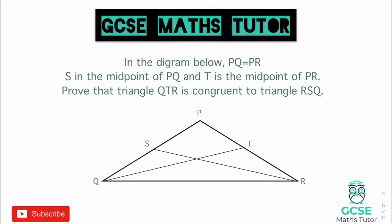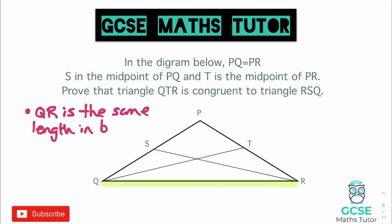The easiest thing to see here is that both triangles share the same base length QR. So our first point: QR is the same length in both — that proves a side. Let's think about what else we can prove.